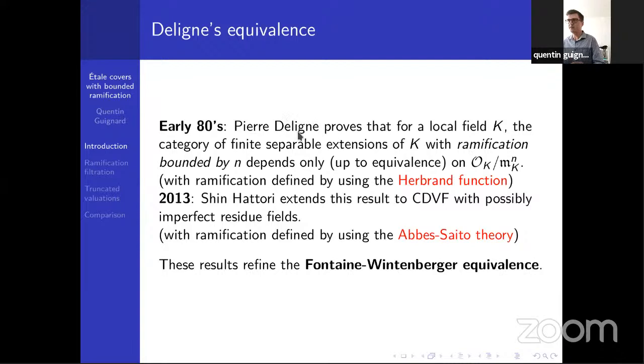This result by Deligne came later than the Fontaine-Wintenberger theorem. For those who don't know, the Fontaine-Wintenberger theorem is an isomorphism of absolute Galois groups for some fields, one of which is characteristic zero and one is characteristic p. In a sense, it's the same spirit as what Deligne was doing. Actually, one can recover the Fontaine-Wintenberger isomorphism from Deligne's result by going to the limit here. This is one possible motivation, but in a way it is finer than the Fontaine-Wintenberger isomorphism because it is at the finite level, without going to the limit of a tower.